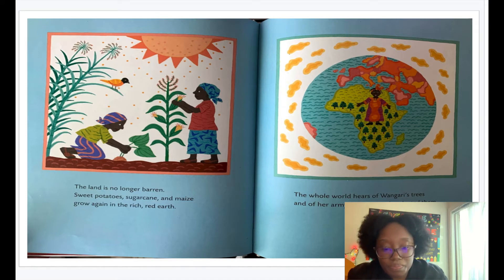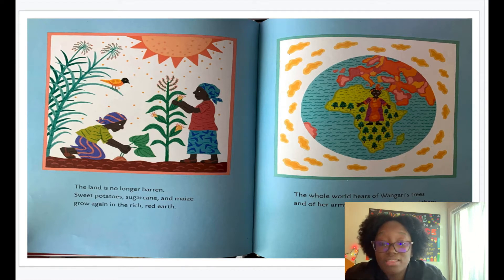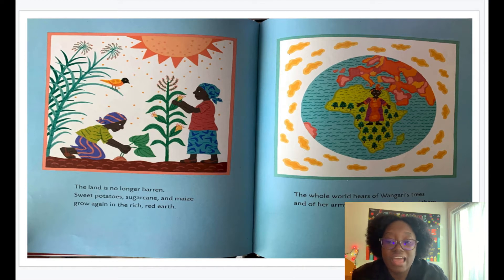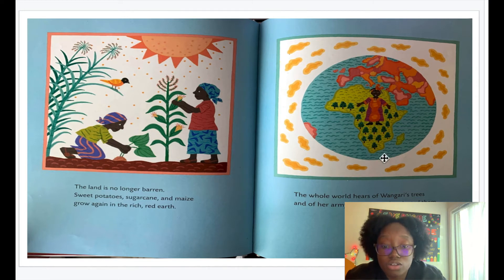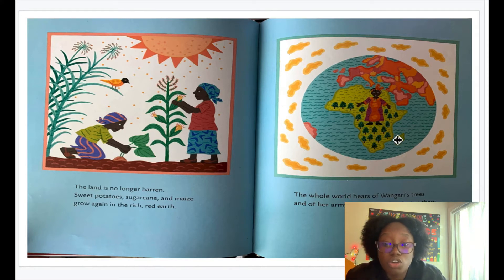Let's read the next page. The whole world hears of Wangari's trees and of her army of women who planted them. On this page, how does the illustration help us understand that Wangari's trees and the women who planted them were well known? If you look at the picture, you can see Wangari standing in front of the world with trees around her — that's what tells us in the illustration that her trees and the women who planted them were well known.